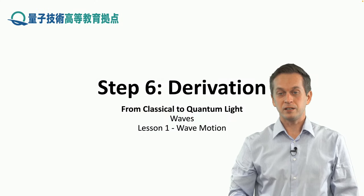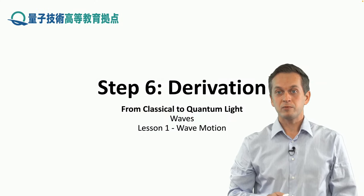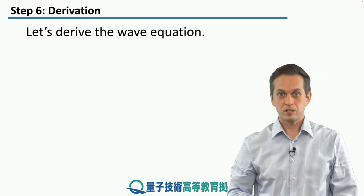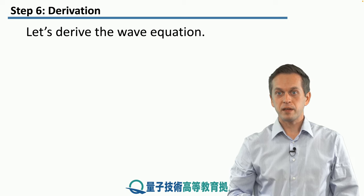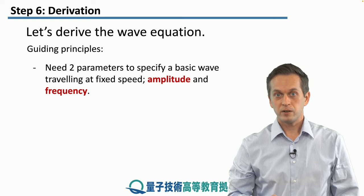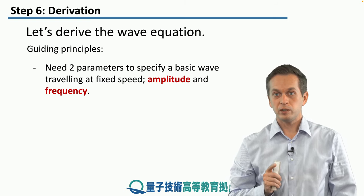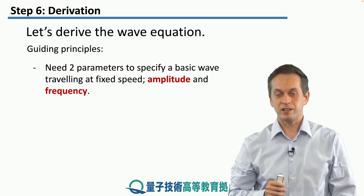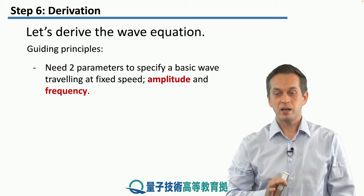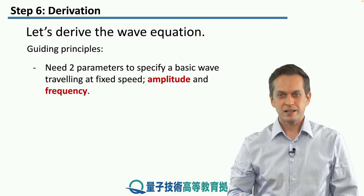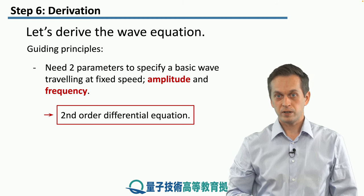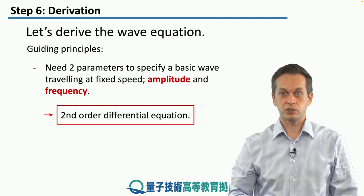Step six: derivation. Finally, we are at the place where we can start deriving our wave equation in one dimension. Before we do that, let's think about what we expect from the wave equation. There are two guiding principles. One is that we need two parameters to specify a basic wave traveling at a fixed speed — we need the amplitude and the frequency. This tells us that we should expect the wave equation to be of second order, so we are looking to derive a second order differential equation.